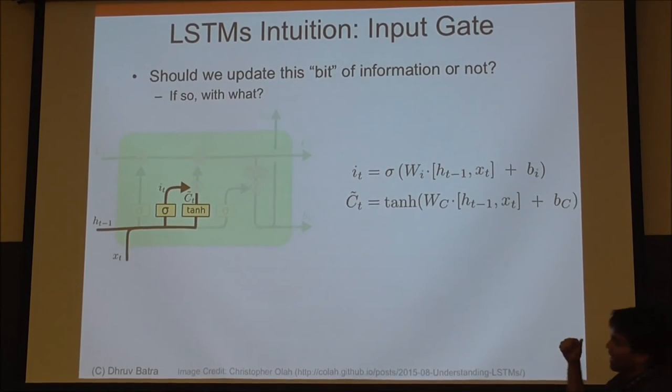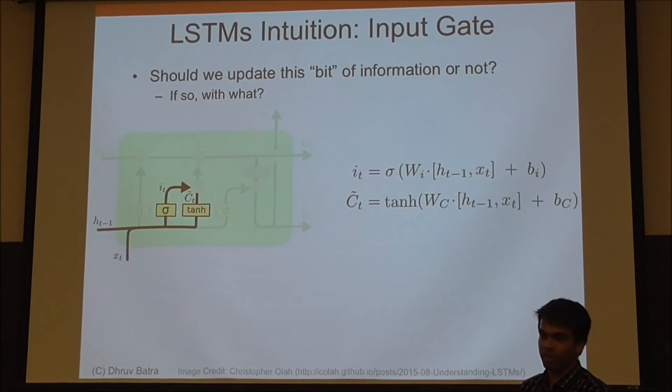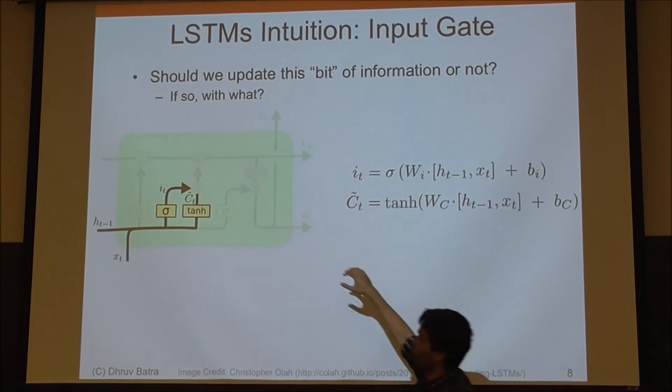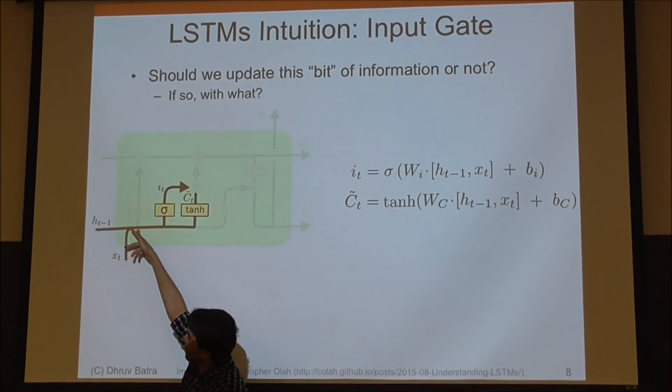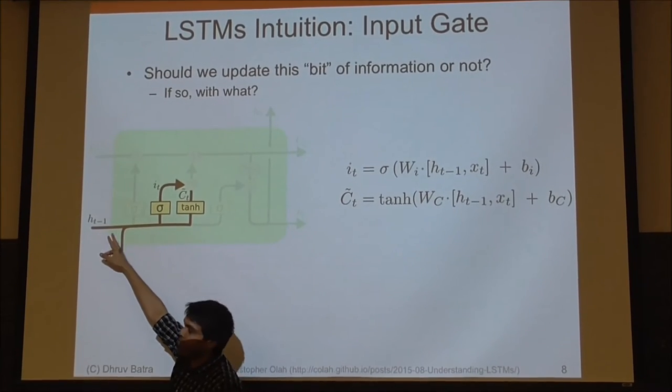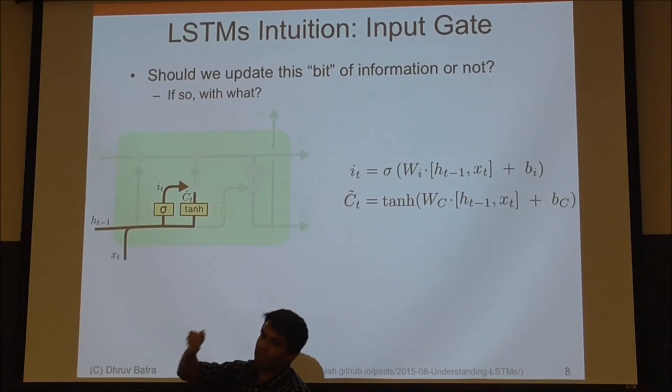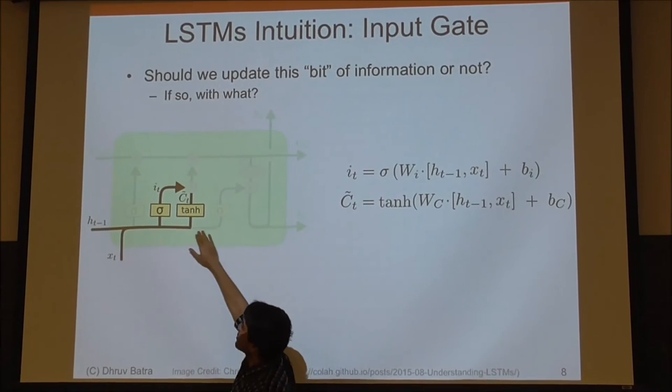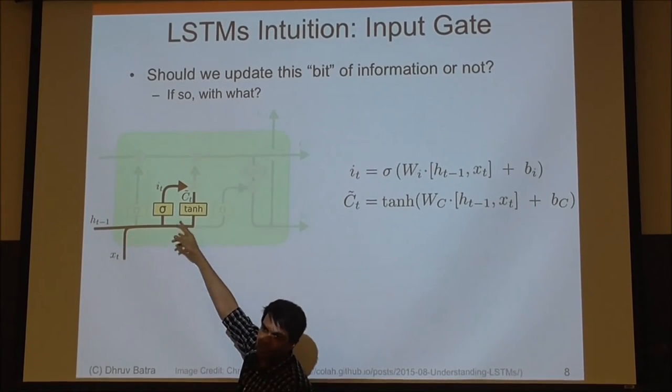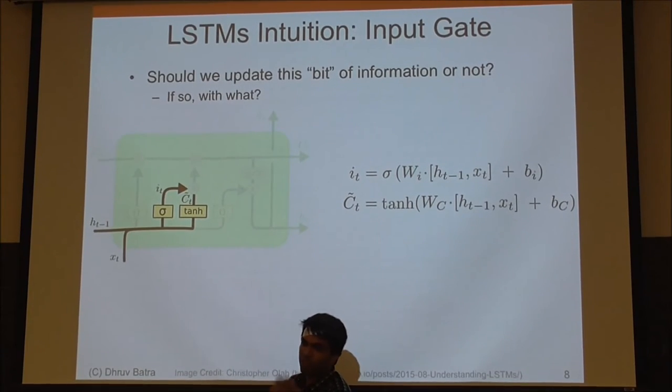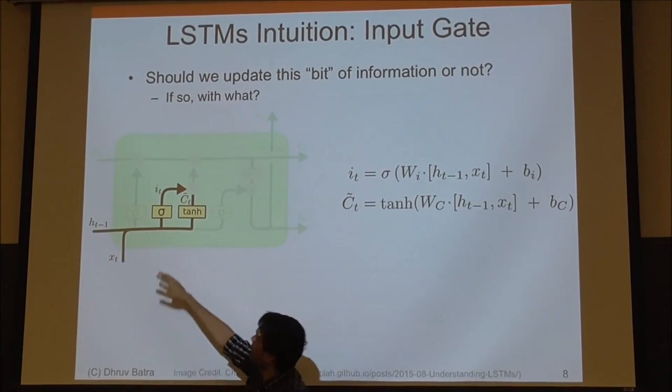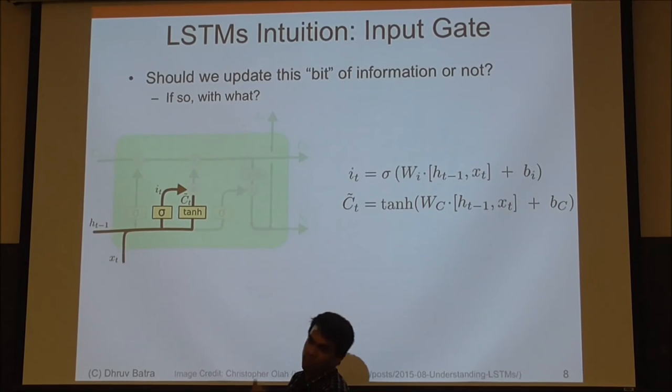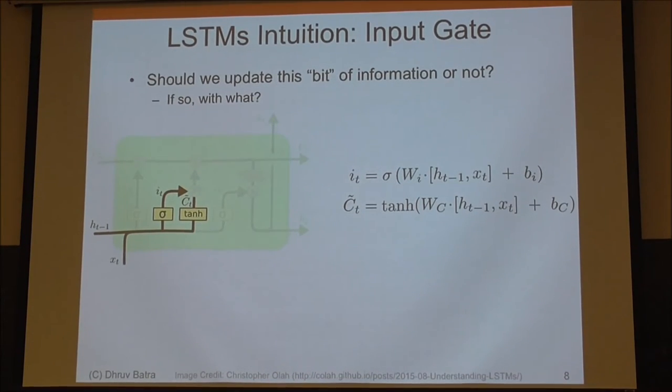The second thing is, if I'm forgetting it, is there something that I need to overwrite this with? So should we update this bit of information or not? And if so, with what? That's the job of the input gate. You take, again, those two same inputs, x and hidden state, pass them to a sigmoid. If that is one, that tells me that I need to update this dimension with some new information. What is that new information? Same thing, pass through a tanh, so your information bits are between plus one and minus one. They're quote-unquote bits. And every time you pass through a sigmoid, it's the output of the gate, so it's saying whether or not I do something. It's smooth. And that's essentially it.